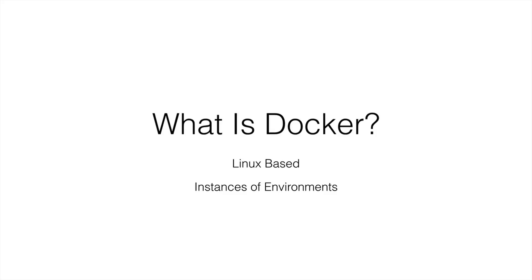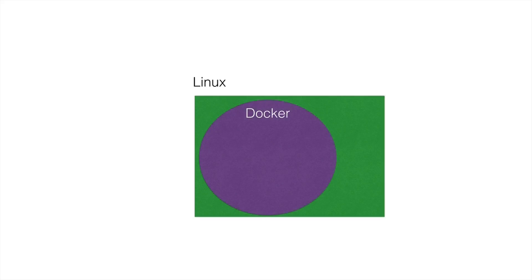Let's look at the structure of Docker. Basically, you have a Linux machine, and inside of the Linux machine you have Docker running. Docker makes use of Linux to create its containers. Inside of Docker, you have an image. An image is like a class in programming — you can create an instance of it. When you create an instance of the image, that is called a container, which is like an instance of the class becoming an object.